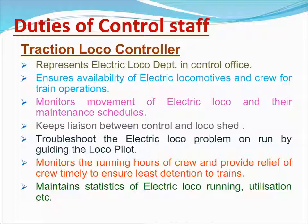The Traction Loco Controller represents the electrical department in the control office. Ensures availability of electric locomotives and crew for train operations. Monitors movement of electric locos and their maintenance schedules. Keeps liaison between control and loco sheds. Troubleshoots electrical problems on run by guiding the loco pilot. Monitors running hours of crew and provides timely relief to ensure least detention to trains. Maintains statistics of electric loco running and utilization.